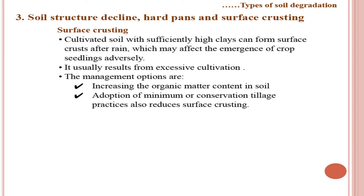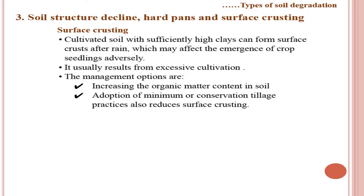Surface crusting: cultivated soils with high clay content can form a surface crust after rain, adversely affecting emergence of crop seedlings. This is observed in winter crops like wheat or chickpea after winter rains following sowing. Breaking the crust may be required to achieve germination. It also results from excessive cultivation. Management options include increasing organic matter content in the soil and adopting minimum or conservation tillage practices to reduce surface crusting.